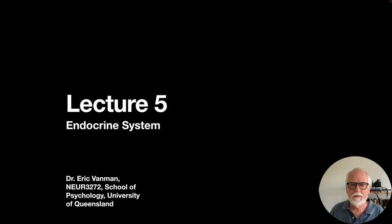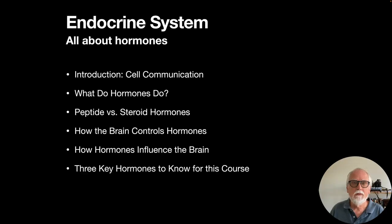Welcome to lecture 5 in social neuroscience. This one's all about the endocrine system, which is talked about mostly in chapter 4 of Sapolsky's Behave book, and you can also find some supplementary information in appendix 2. I'm going to give you an overview of the endocrine system and try to introduce some key hormones that we care a lot about in social neuroscience. There are many hormones we could have focused on.